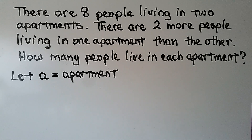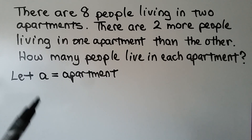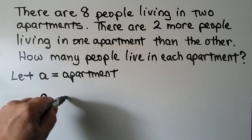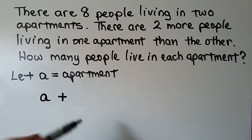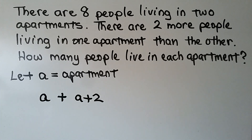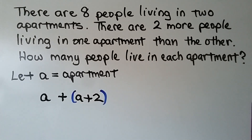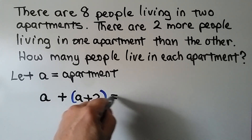To write the equation to solve this, we're going to let a equal apartment. So we're going to have a first apartment, a. We're going to add to it an apartment that has two more people, so that's going to be a plus two. So we're saying this is the first apartment, this is the second apartment, and we know that there are eight people living in both apartments, so we're going to set it equal to eight.